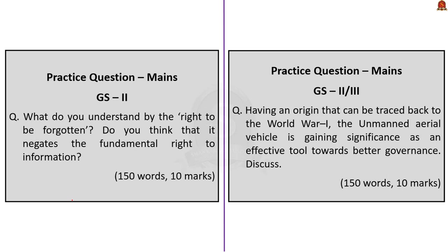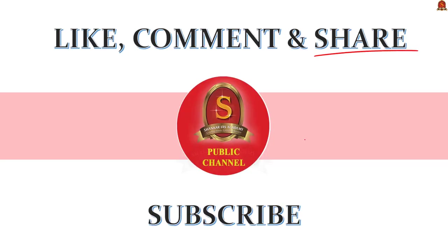The next question is based on GS Paper 2 and asks to explain about the right to be forgotten and express an opinion on whether it negates the fundamental right to information. The following question is based on unmanned aerial vehicles — that is, drones — asking how drones are gaining significance as an effective tool towards better governance. Here you can list out government initiatives using drones for service delivery, such as planning to use them for vaccine deliveries and applications in the agricultural sector. With this, we have come to the end of today's Hindu News Analysis. If you liked the video, don't forget to like, comment and share, and do subscribe to Shankar IAS Academy YouTube channel for more updates related to civil services examination preparation.